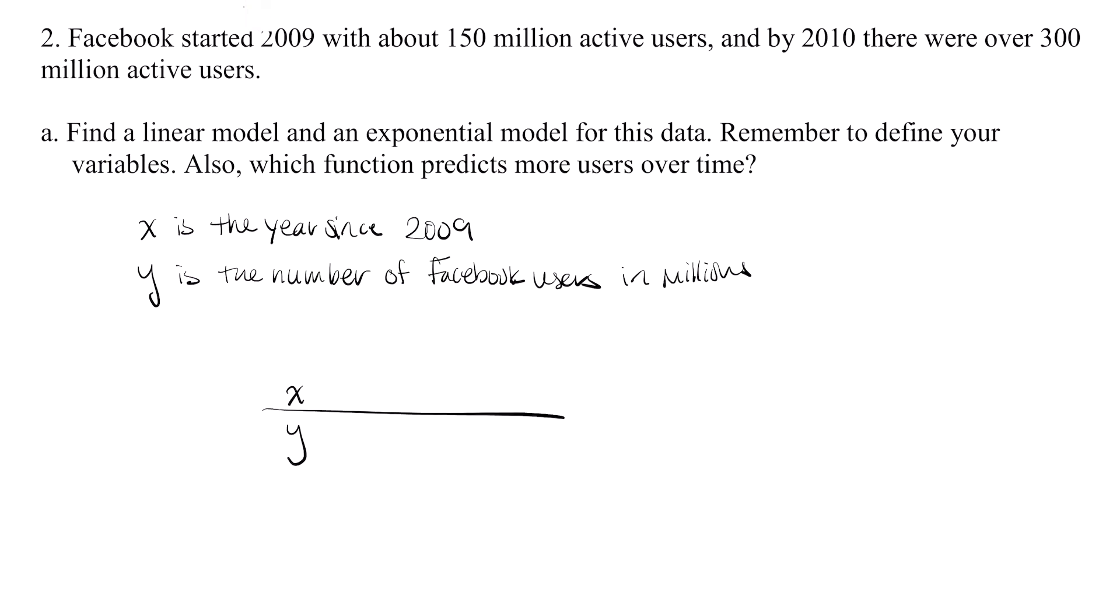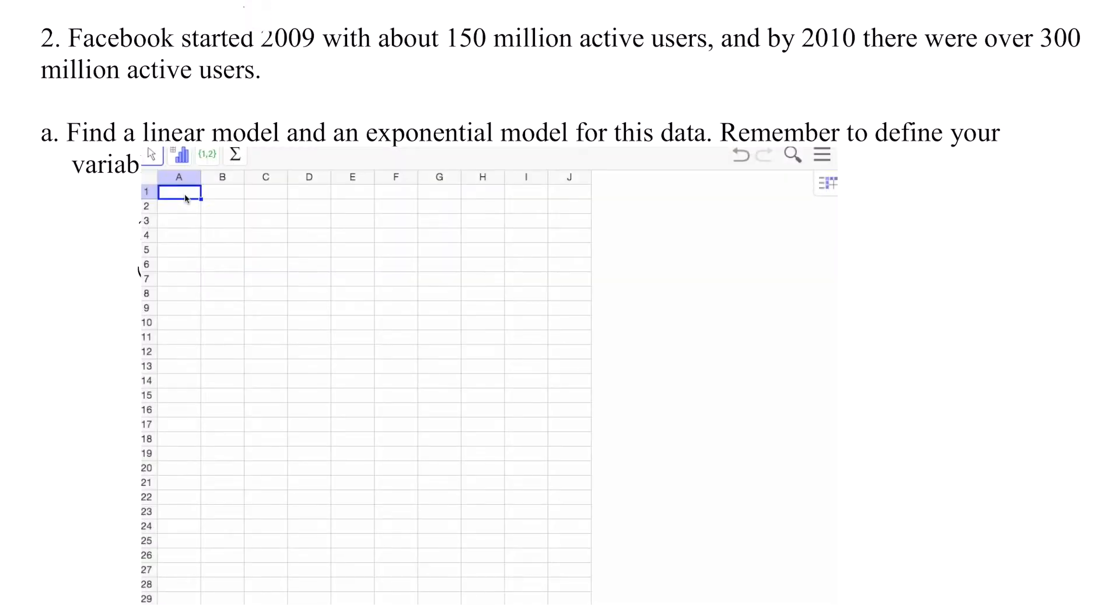Now that that is done, you'll only have the spreadsheet. Let's make a quick table. X, Y. In 2009, which is represented by zero, we have 150. I'm not writing 150 million because I know this is in millions. And I'm not writing 2009 here because this has been zero years since 2009.